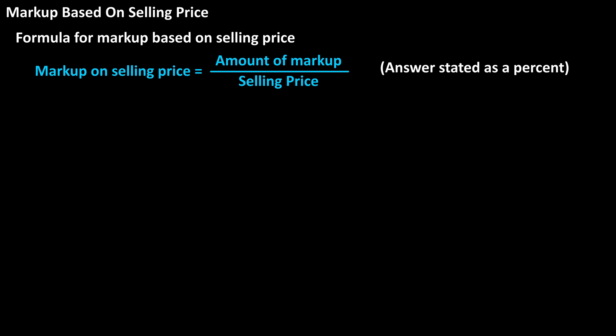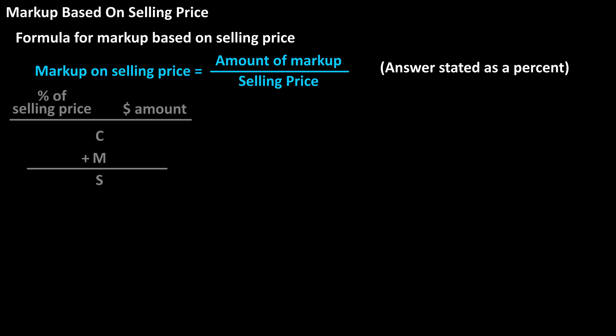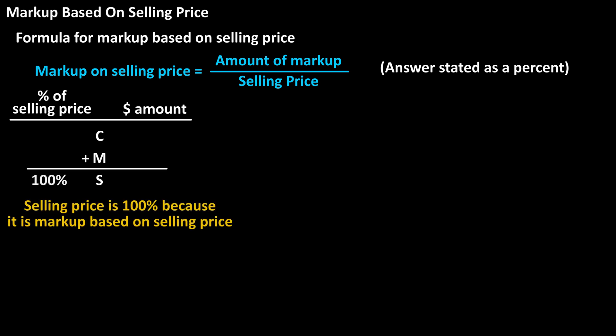For markup on selling price, we're going to start by making a table where C is cost, M is markup, and S is selling price. On the left side of the table we'll have percentages of selling price, and on the right side we'll have the dollar amounts. Since this is based on selling price, the percent for selling price will always be 100%.